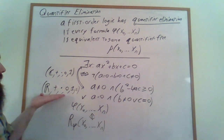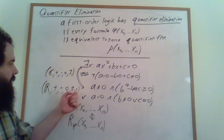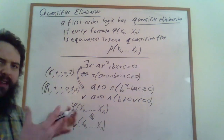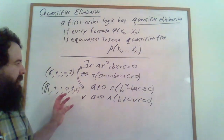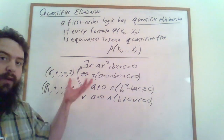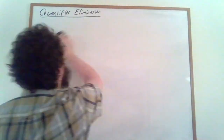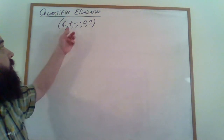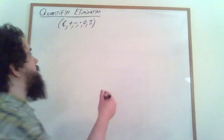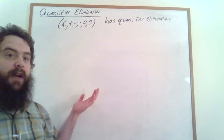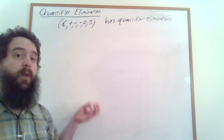Let's focus on the case where we're looking at the complex numbers along with addition, subtraction, multiplication, and constants for 0 and 1. I'd like to prove that this structure has quantifier elimination — that any formula with any number of quantifiers in it can be translated into an equivalent formula with no quantifiers. In order to do this, all we have to do is show that we can eliminate one existential quantifier. Let's say that we have a formula that looks like: there exists an x such that something is true, and this something here is quantifier-free.